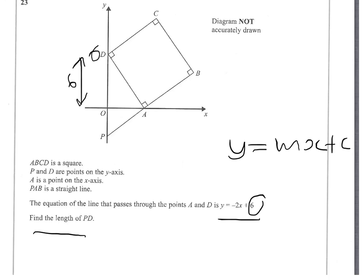That leaves us needing to find the distance OP and then add that to 6. This is very important: we can see that PB is perpendicular to AD. So we can find the equation of the perpendicular line to Y equals minus 2X plus 6.